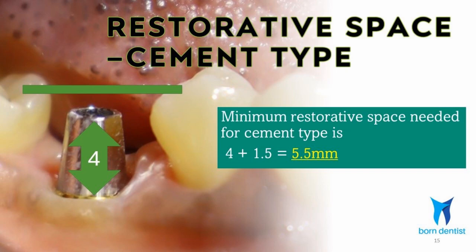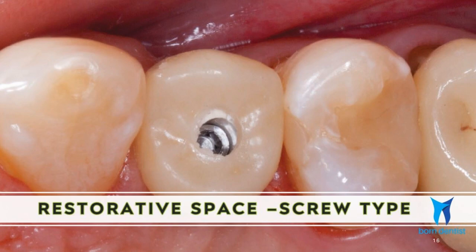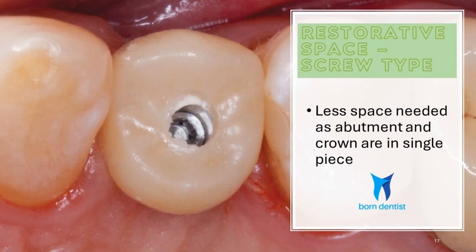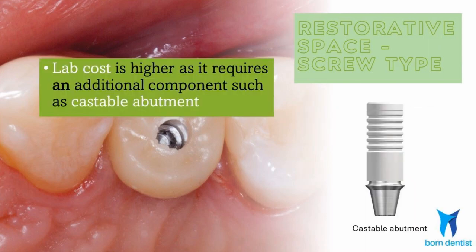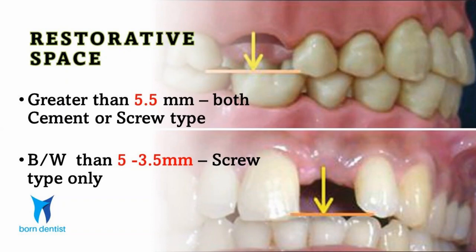The first requirement for a cement retained implant crown is a vertical restorative space of 5.5 mm. In a screw retained crown, the restorative space requirement is much less, as the crown and abutment are fabricated as a single piece. The minimum space needed for a screw retained restoration is 3.5 mm. However, the lab cost is higher with a screw type, as it requires an additional custom-made abutment fabricated from a castable or UCLA abutment. If the restorative space is 5.5 mm or greater, both cement and screw type are possible.